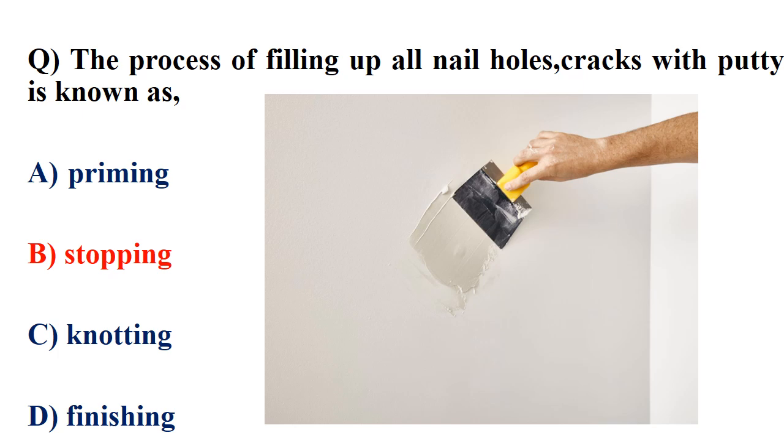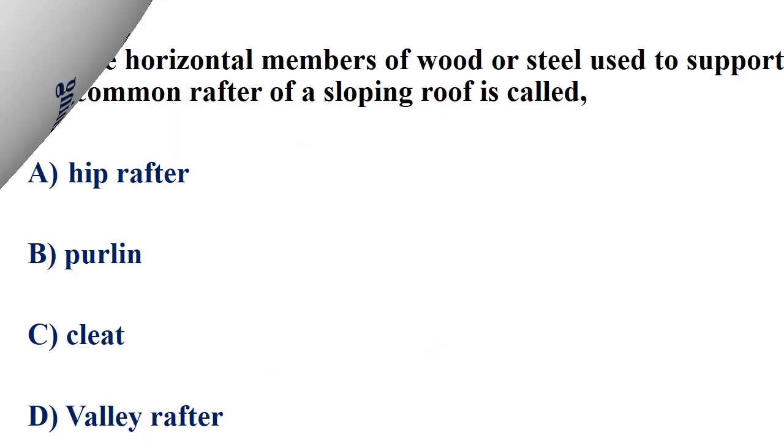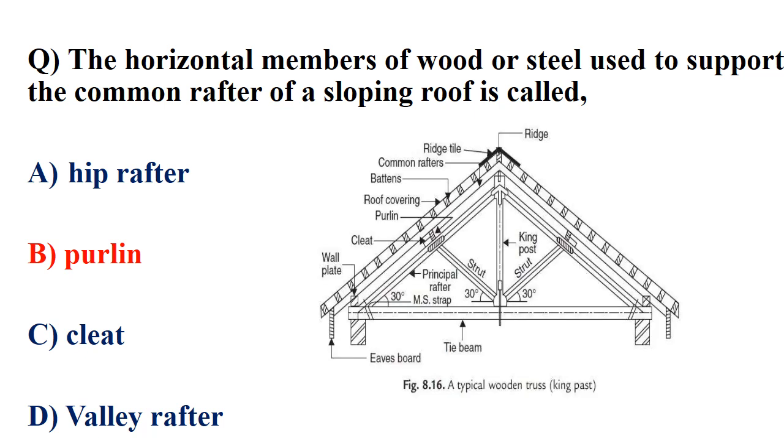The horizontal members of wood or steel used to support the common rafter of a sloping roof is called purlin. The common rafter is an inclined member, while the purlin is the horizontal member.